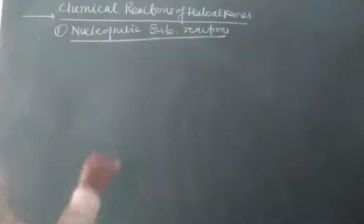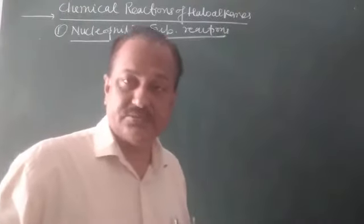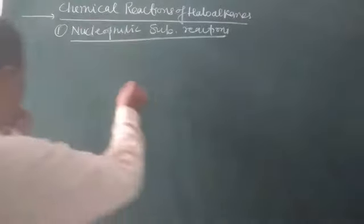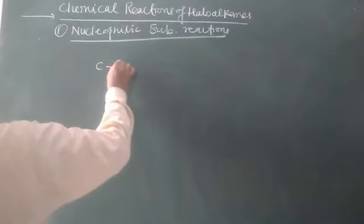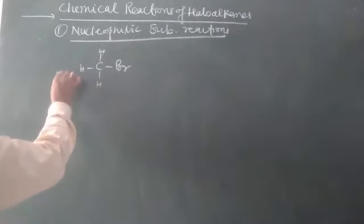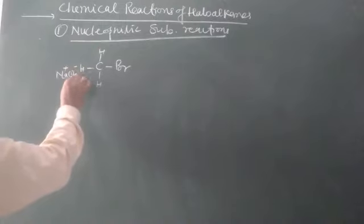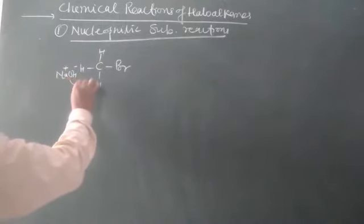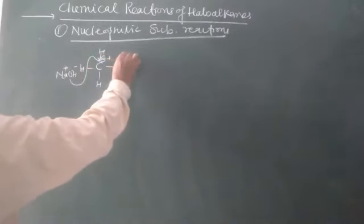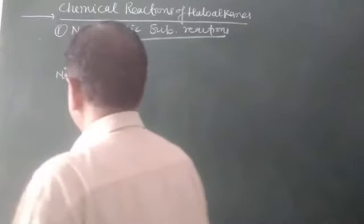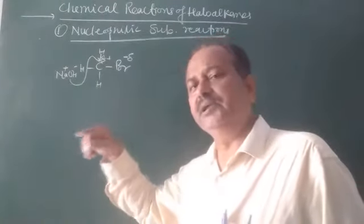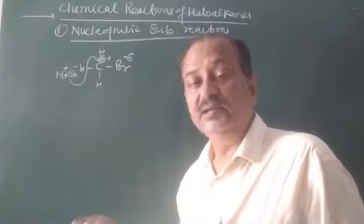The first topic is nucleophilic substitution reactions. Haloalkanes are polar in nature, so they are attacked by nucleophiles. Any haloalkane is attacked by a nucleophile — the nucleophile attacks the carbon bearing the halogen, which has a delta positive charge, while the halogen has a delta negative charge. This is a nucleophilic substitution reaction.